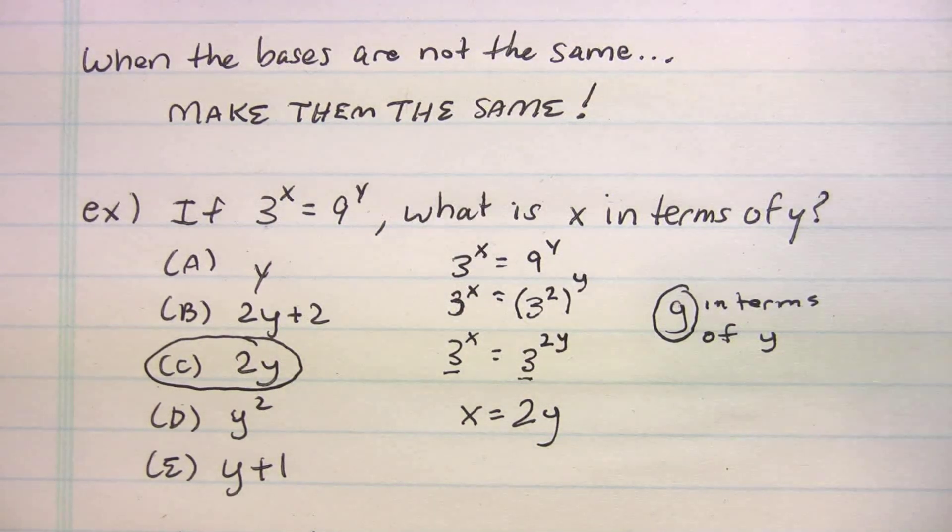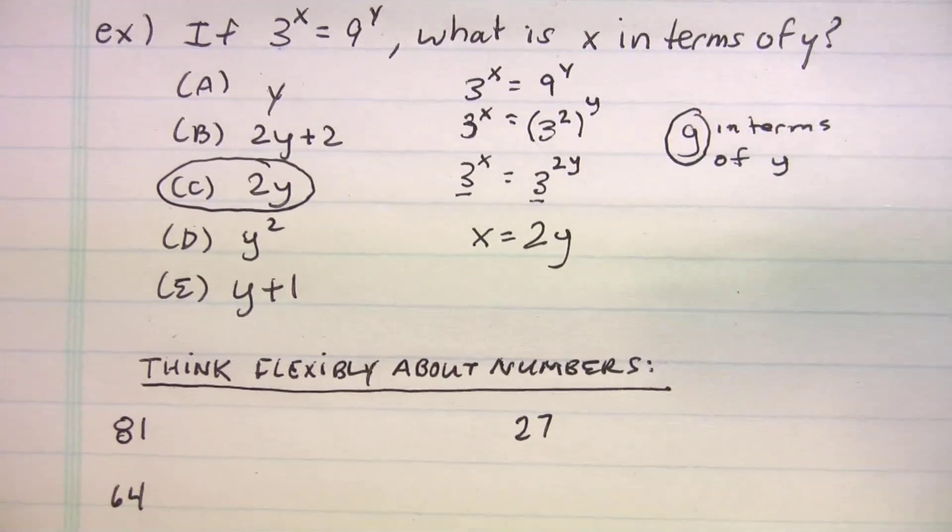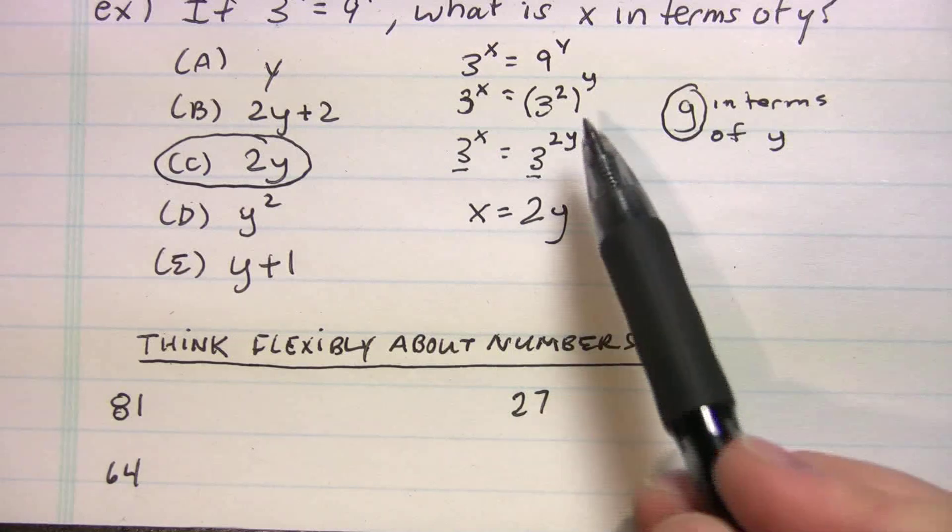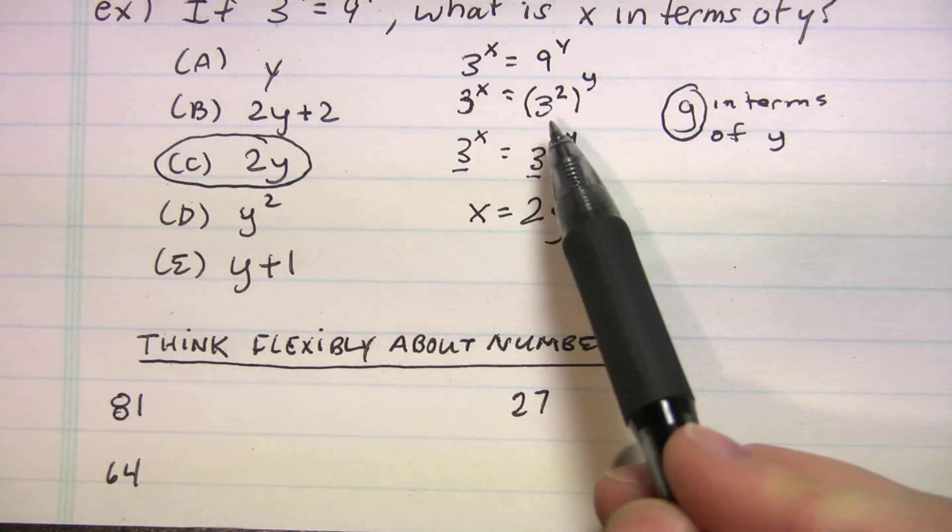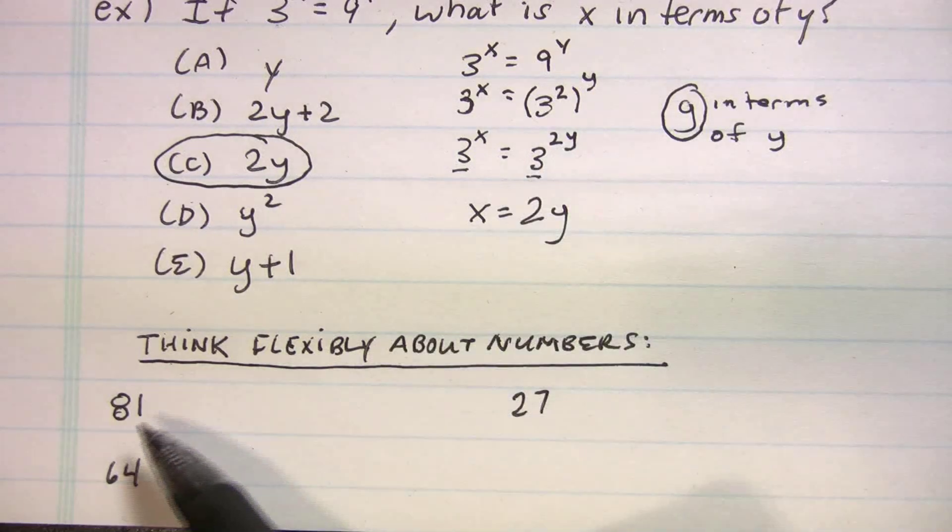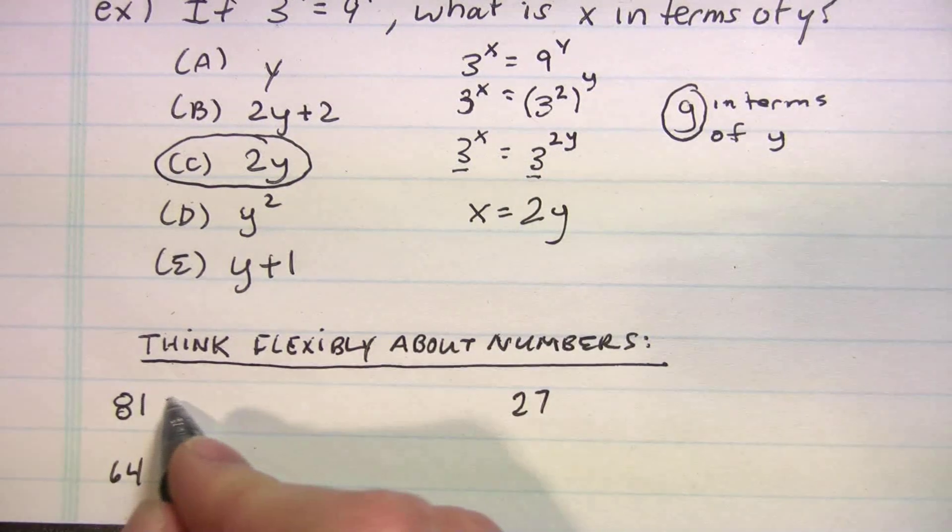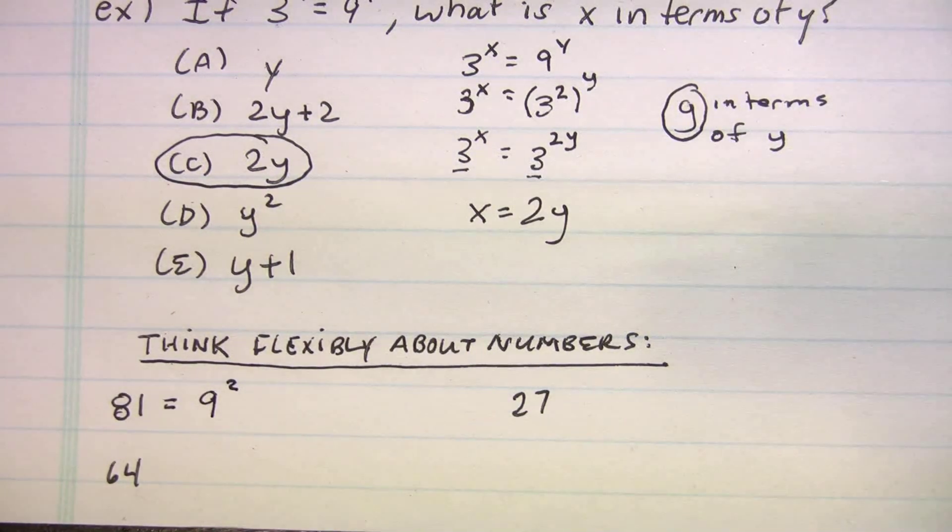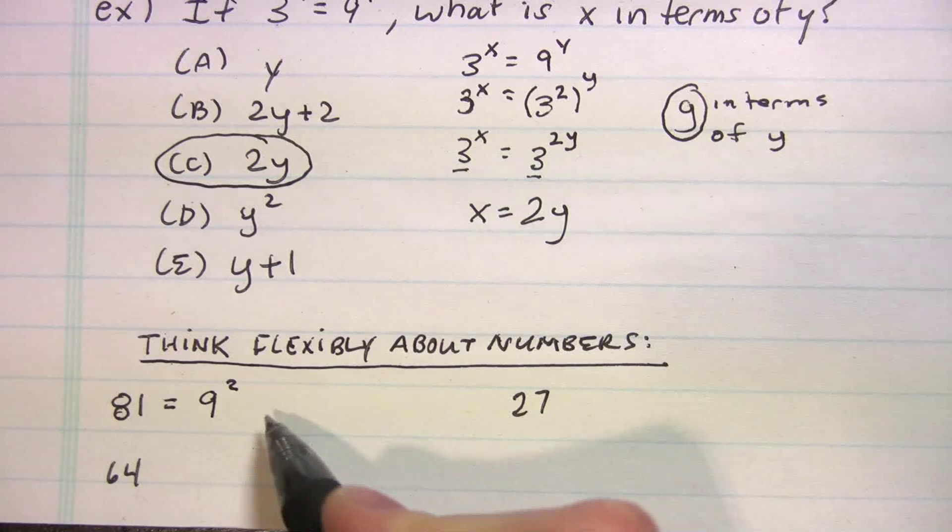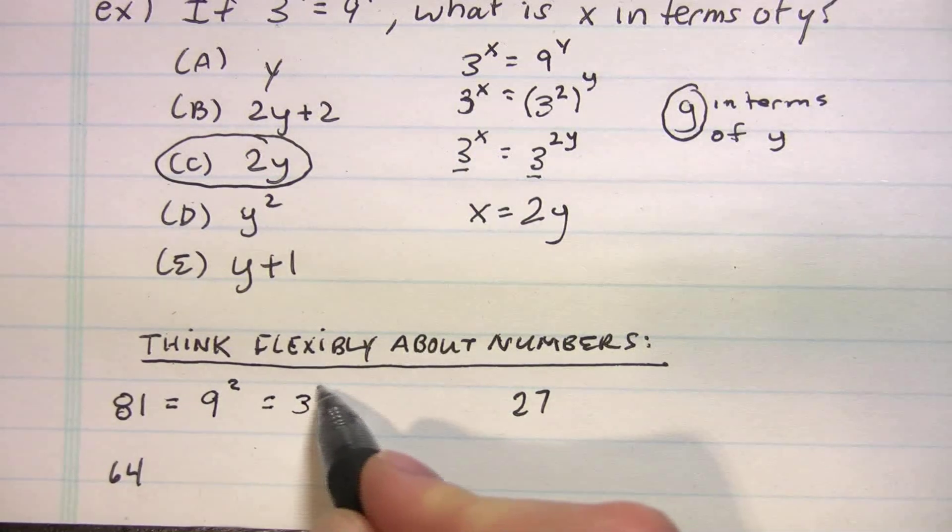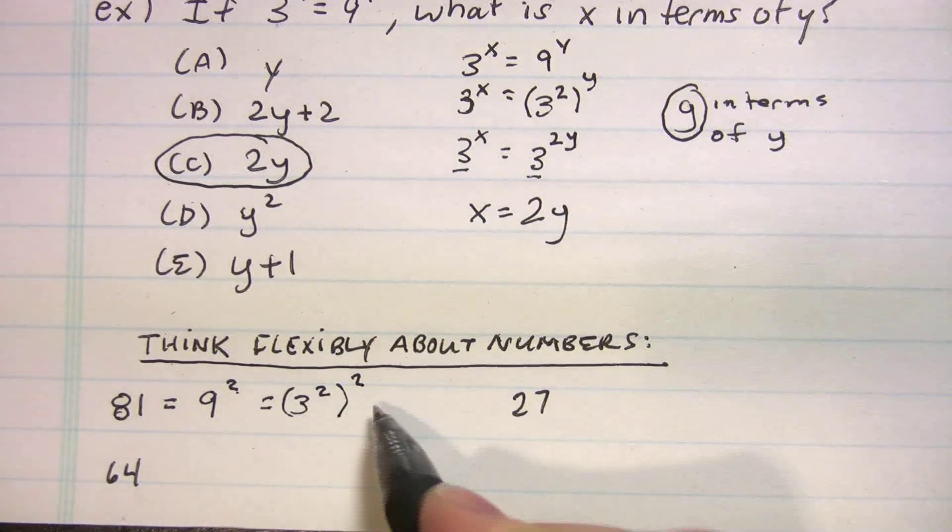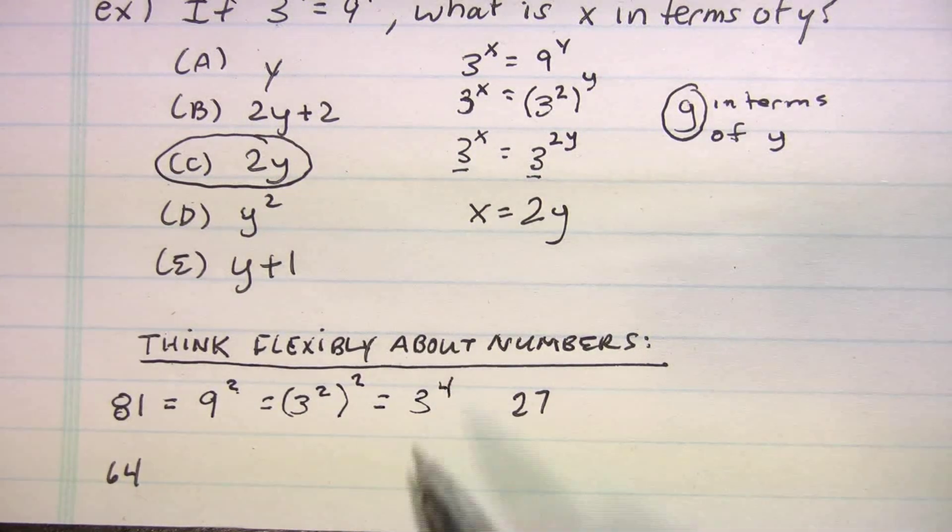The last thing I'm gonna talk about in fundamentals one is thinking flexibly about numbers. Now, what does that mean? Well, as we saw in the last one, we gotta convert 9, or we gotta change it into a number that has a 3 with the base, right? So, I just wanna show you 81. How can we change that? We can make that 9 squared, right? And we can even go further with that because 9 is 3 squared. But you gotta remember that whole thing was being squared. Can't forget that 2 from before. So, that's 3 to the 4th.